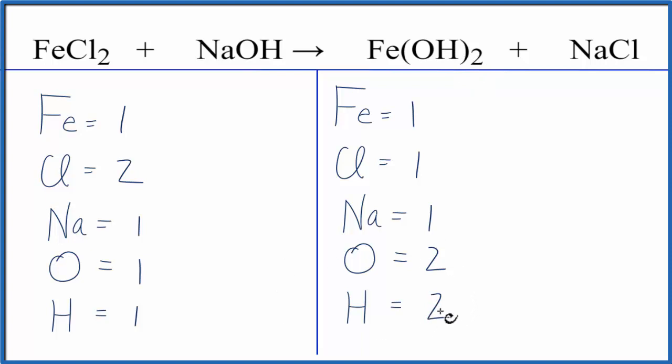Why don't we leave the oxygens and hydrogens till last? Let's try to fix the chlorines. We need 2 on this side, so we'll need to put a coefficient of 2 in front of the NaCl. When we do that, we get 1 times 2 for the Na. So we have 2 of those, but for the chlorine, 1 times 2. So that did balance the chlorine atoms.